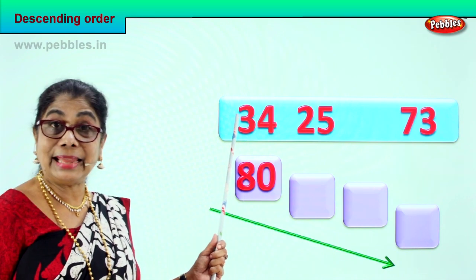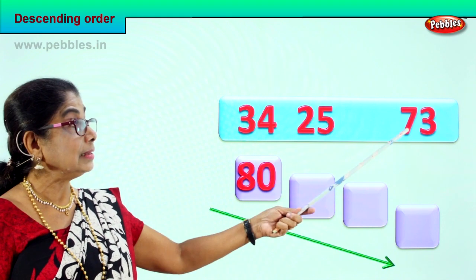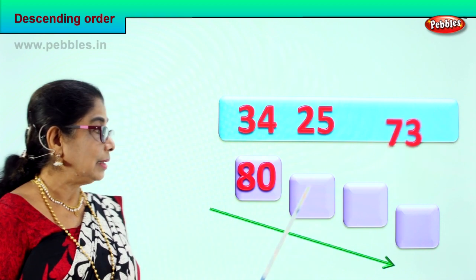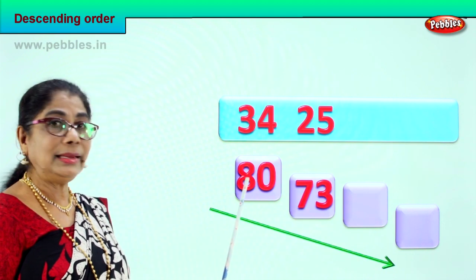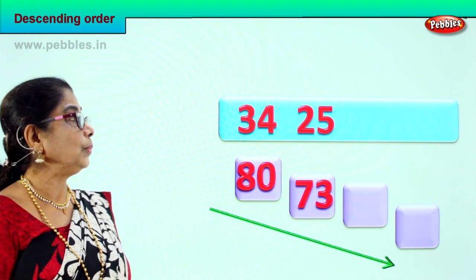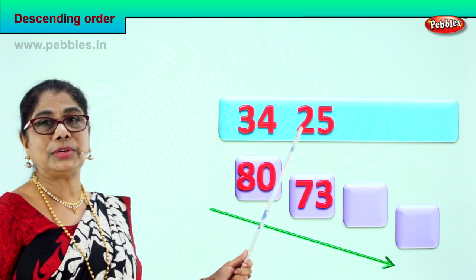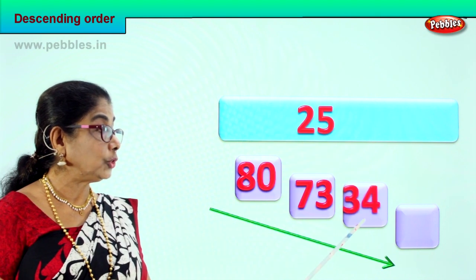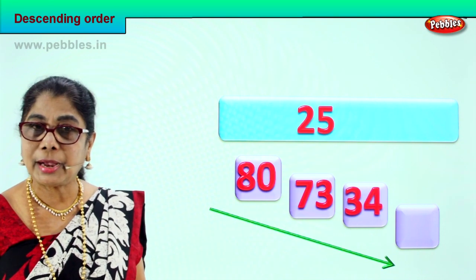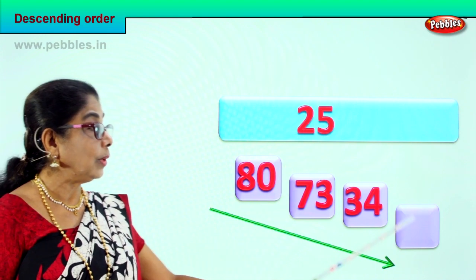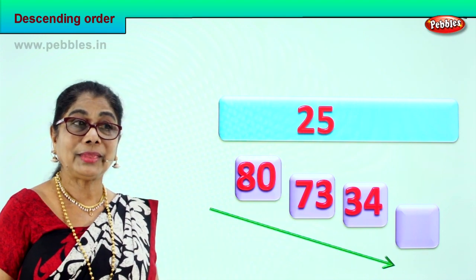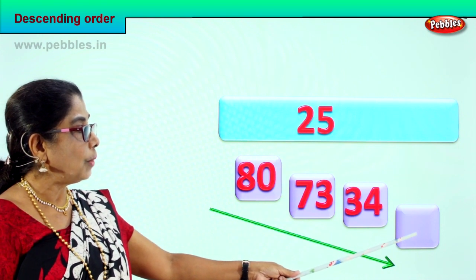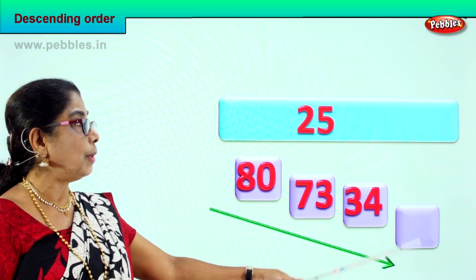Let's check now. Three tens, two tens, seven tens — so the next big number is seven tens, three ones. After that we have three tens and two tens. Certainly three tens, four ones will be the next one. And the smallest among all four is two tens, five ones — that goes right down. Two tens, five ones is the smallest of the four, so it goes in the last box.